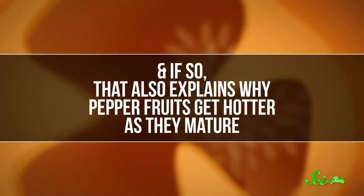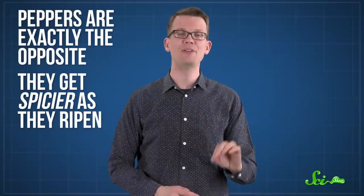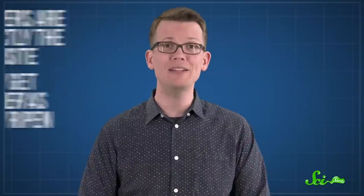And if so, that also explains why pepper fruits get hotter as they mature. Most fruits have gross-tasting compounds in them early on, which is thought to prevent critters from eating them before the seeds are ready to be spread. Once they're ripe, those compounds mostly disappear, inviting seed-spreading animals to feast. Peppers are exactly the opposite. They get spicier as they ripen. And if the spice is meant to deter mold, that makes sense.